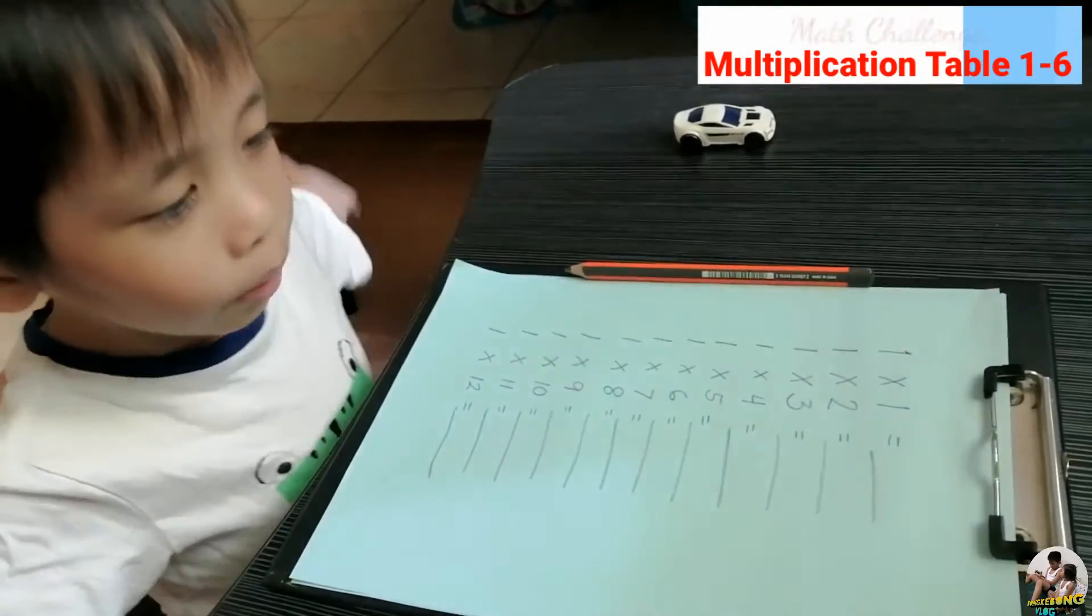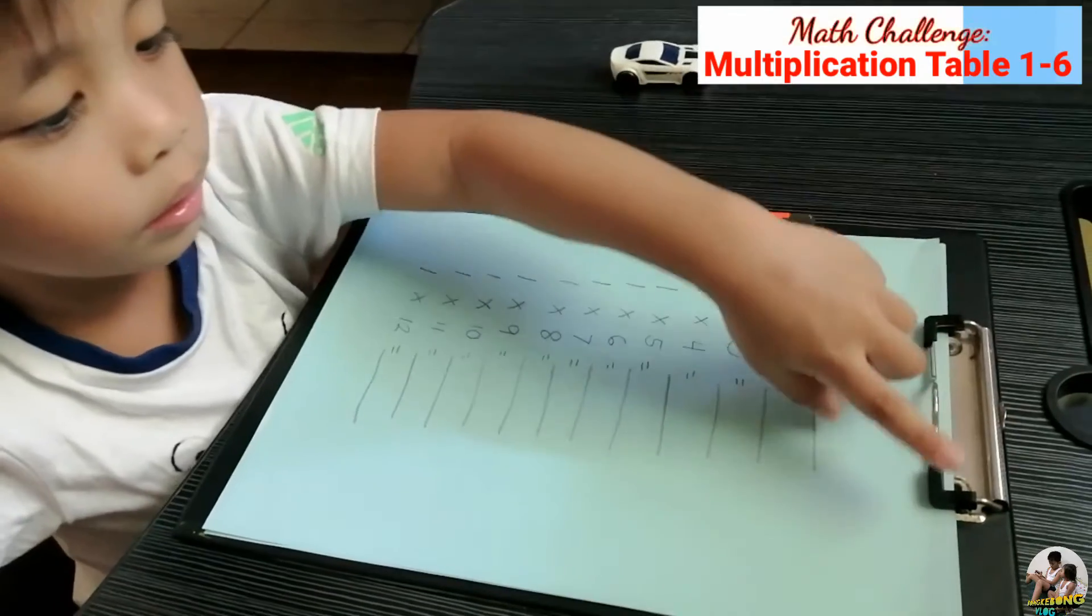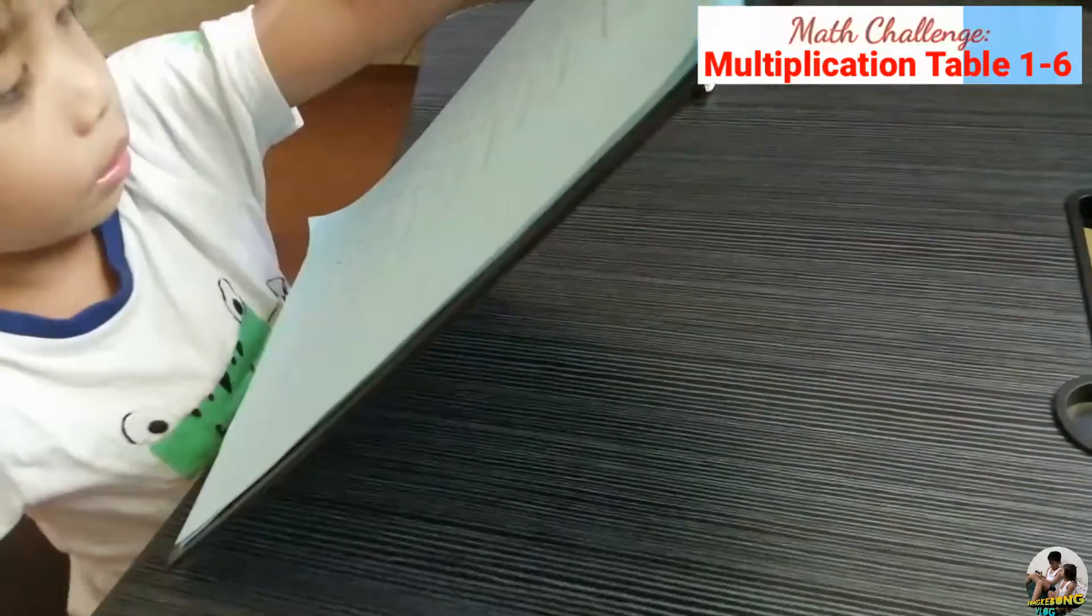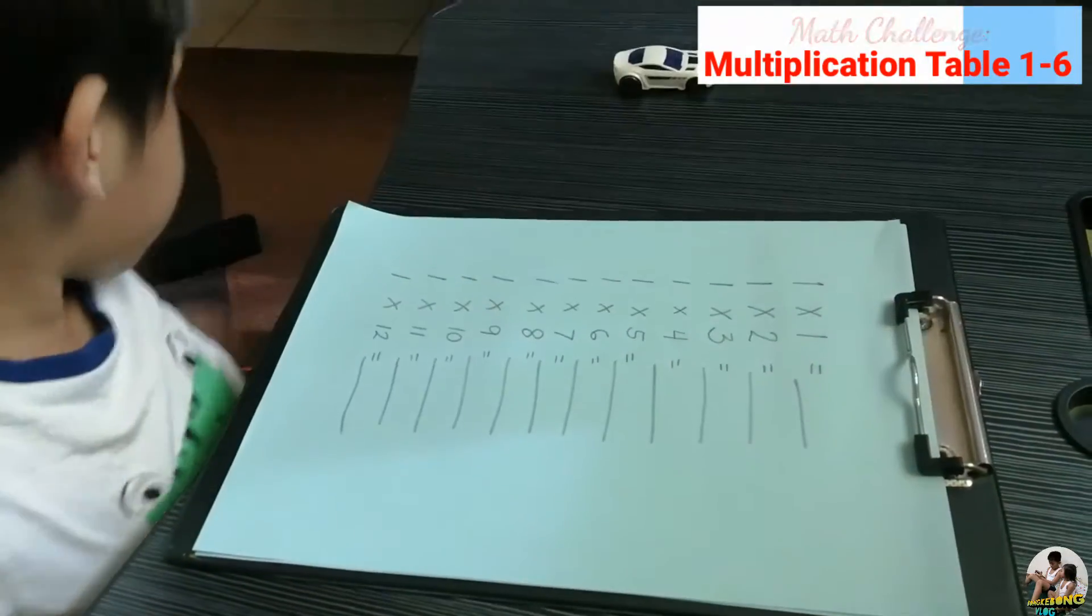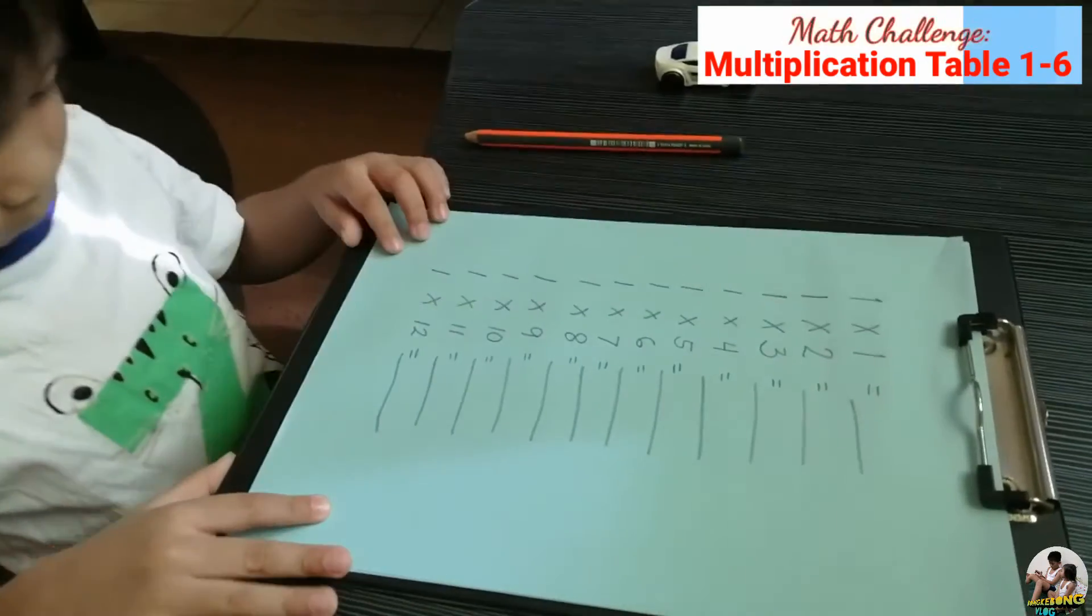Welcome to Bonky Bon Vlog. Okay, this time K.L. will do the multiplication table numbers one to six. Very good. Okay, can you start now?